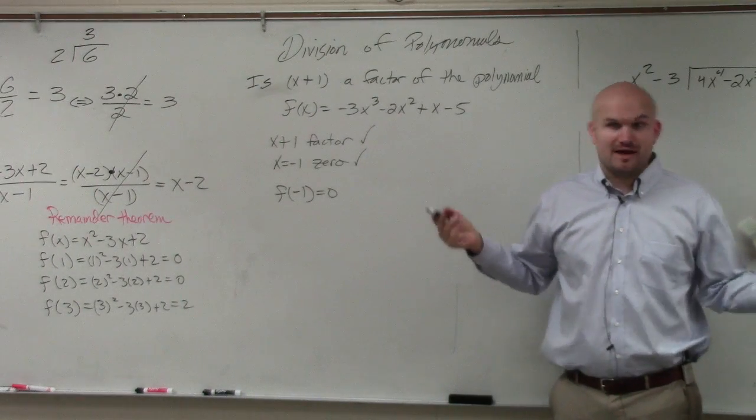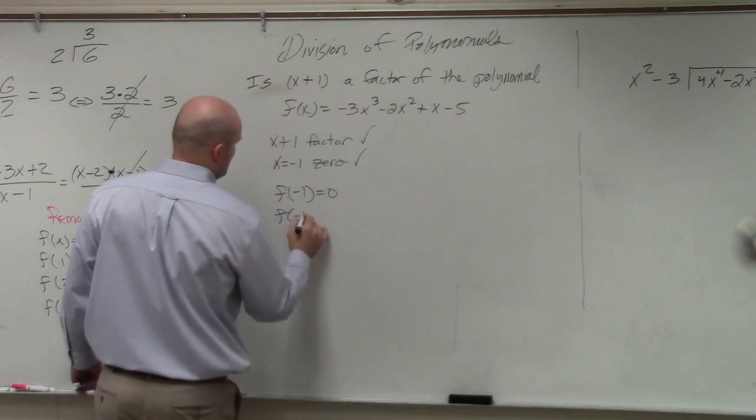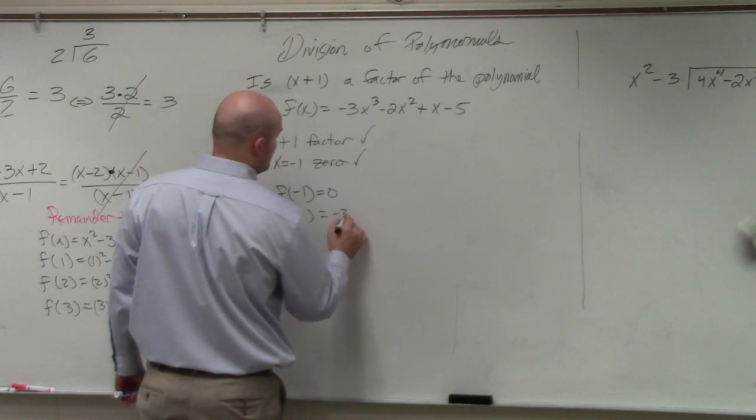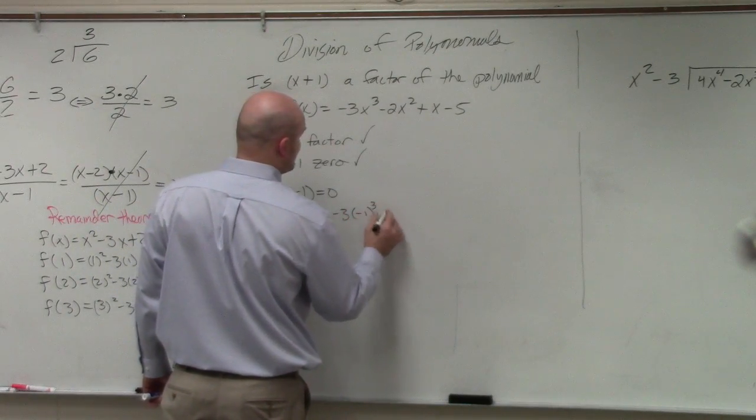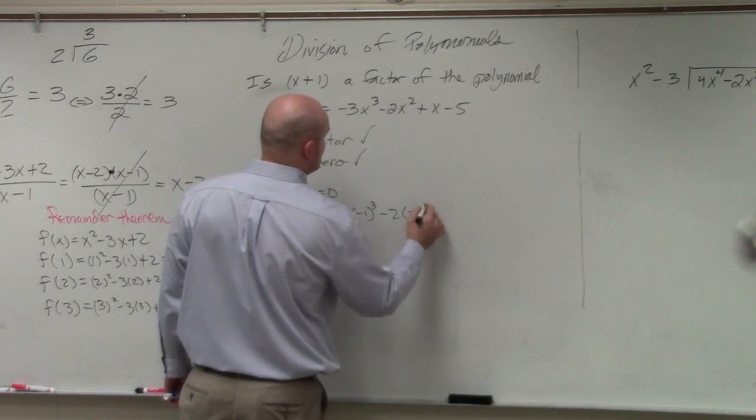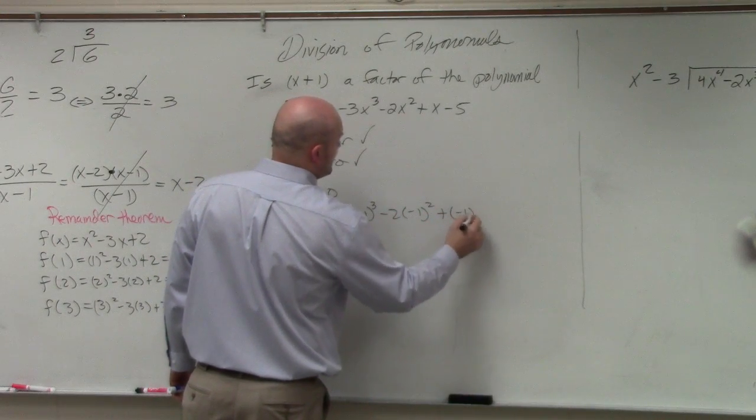So how do I show that? Well, let's plug in f of negative 1. Equals negative 3 times negative 1 cubed minus 2 times negative 1 squared plus negative 1 minus 5.